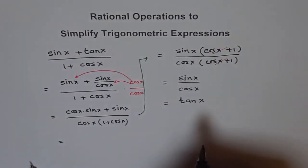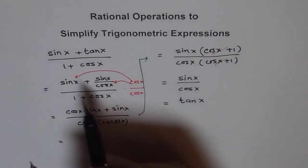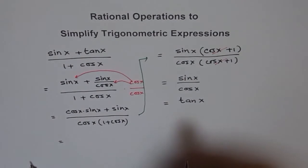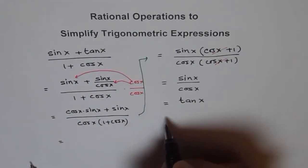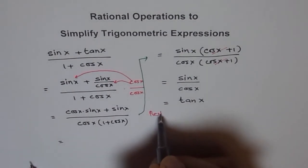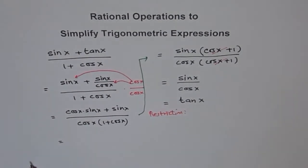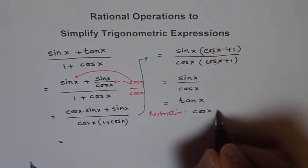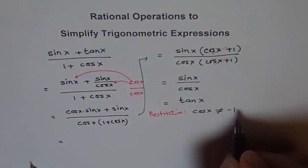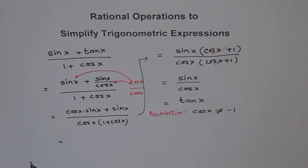One thing to remember is that whenever we write these expressions, we should think about restrictions. The denominator cannot be zero. Since the denominator cannot be zero, we have the restriction that cos x is not equal to minus 1.